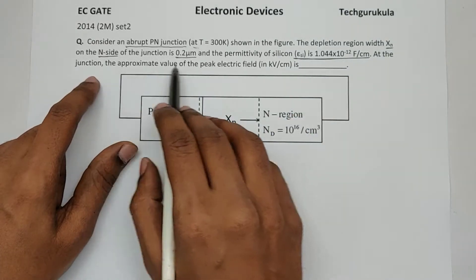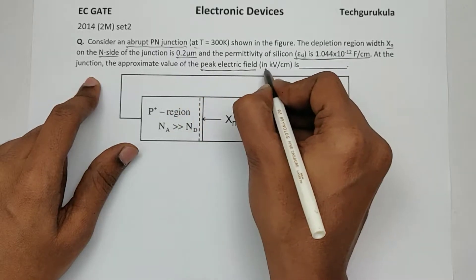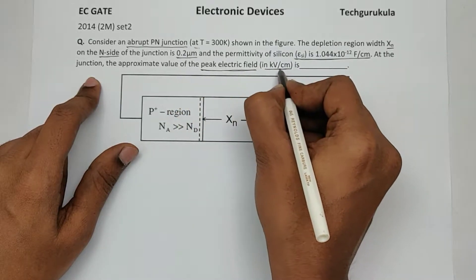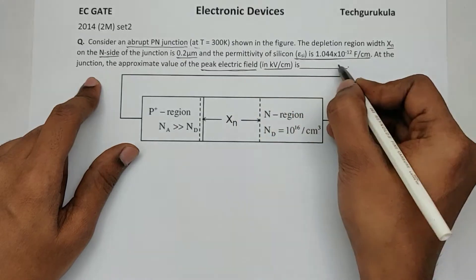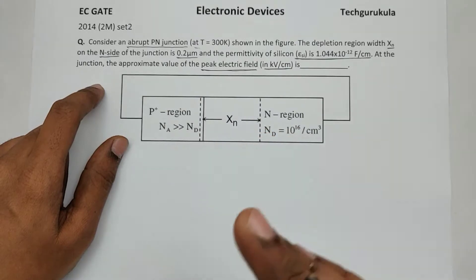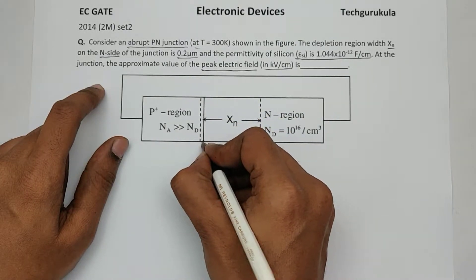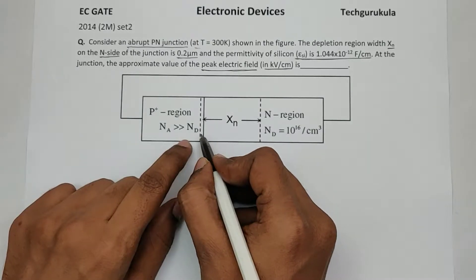At the junction, the approximate value of peak electric field, so peak electric field in kilovolts per centimeter. Never forget the units in which they are asking. Okay, so the peak electric field. We know that the electric field is the peak at right at the junction, which means the junction at which you have this P and N differentiation.